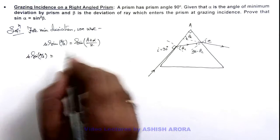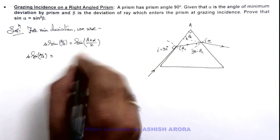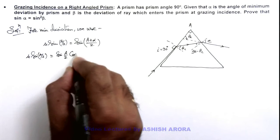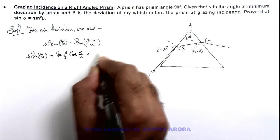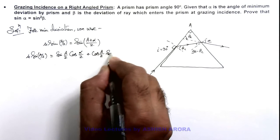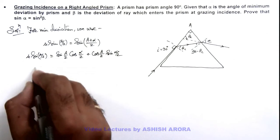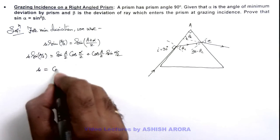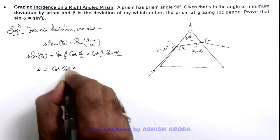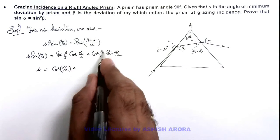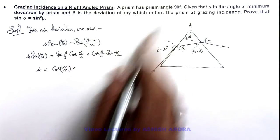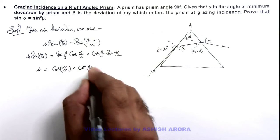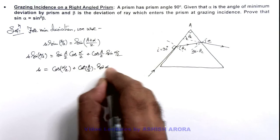Is equal to if you open this identity, this will be sine of A by 2 cos of alpha by 2 plus cos of A by 2 sine of alpha by 2. So the value of mu we are getting here is, this sine A by 2 gets cancelled out, this cos alpha by 2 plus, this will be cot A by 2.